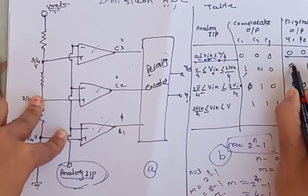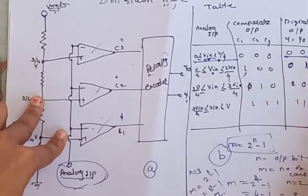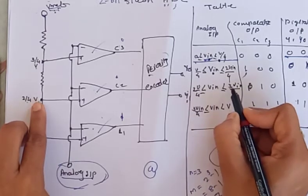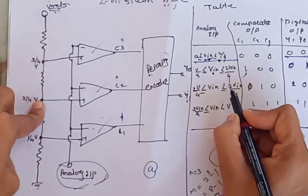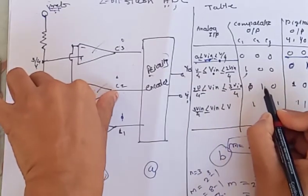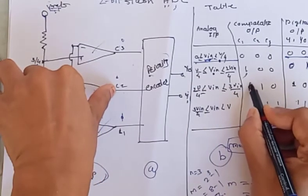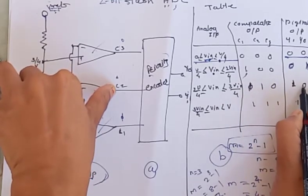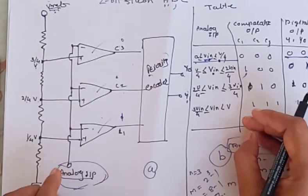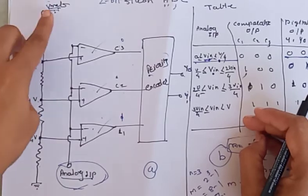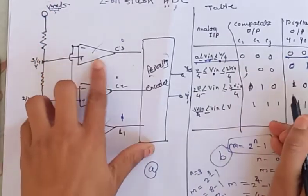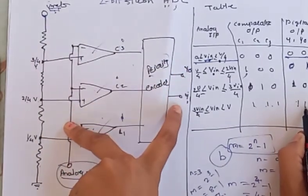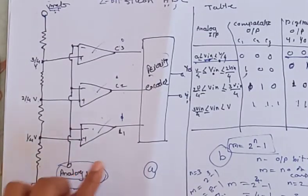When the input voltage is between V/4 and 2/4 of V-reference, comparator C1 output becomes 1 while C2 and C3 remain 0, giving a binary output of 01. When the input voltage equals 2/4 of V-reference, C2 also becomes 1. When the input reaches 3/4 of V-reference, the output becomes 1 in final digital form. This is how the analog voltage is represented in digital form.